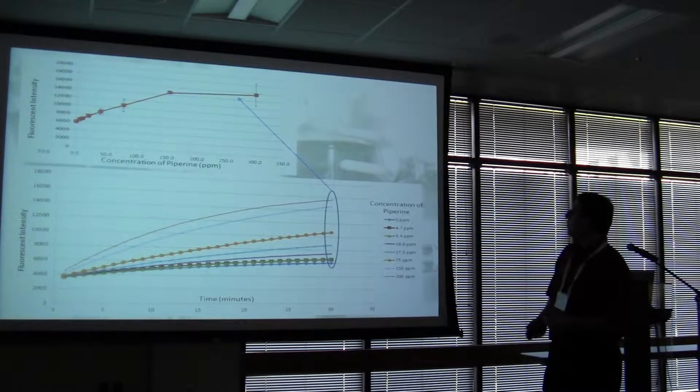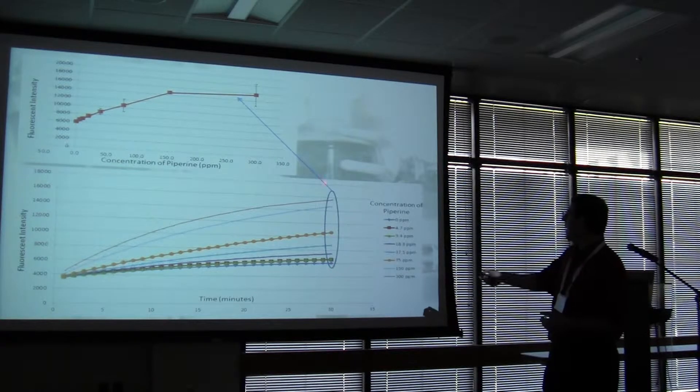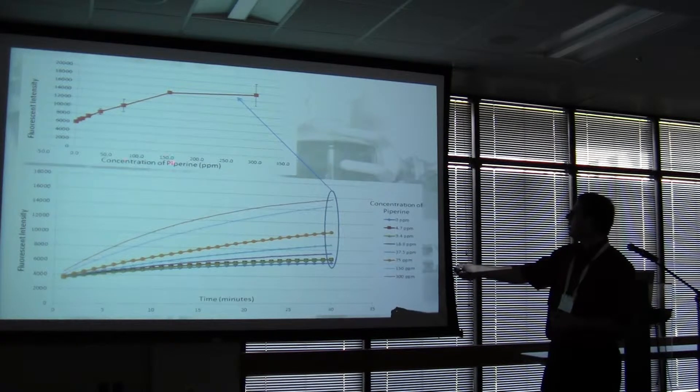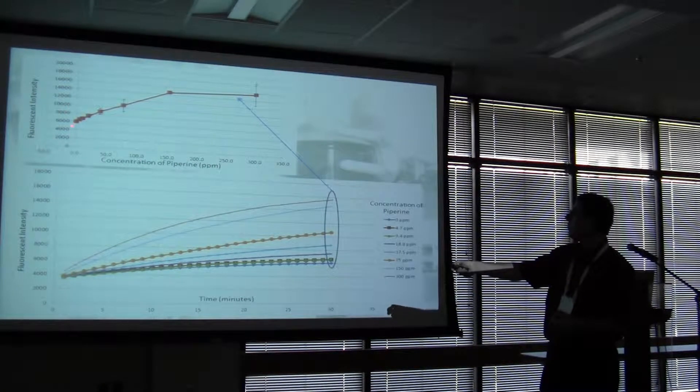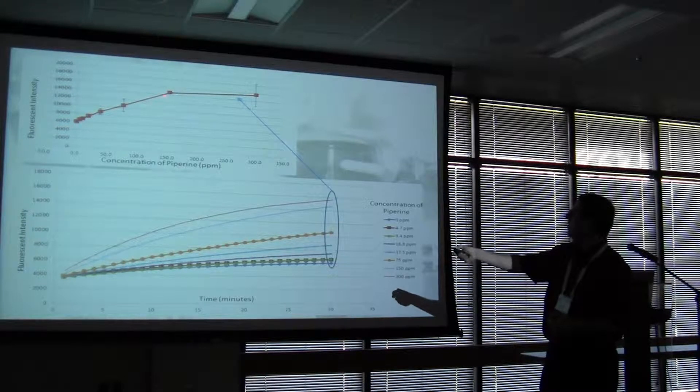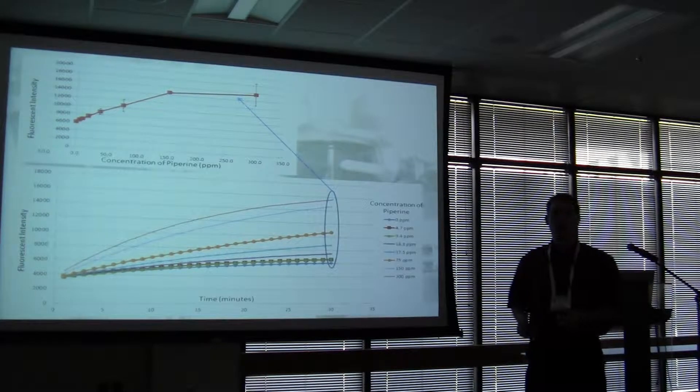A more convenient way to plot this data is to just take the last data point from each of these runs and plot it concentration of analyte, in this case still piperine, against fluorescent intensity. And we can get out this nice dose-response curve.